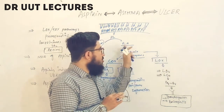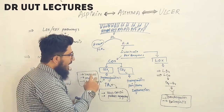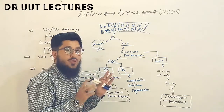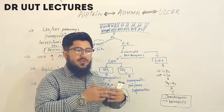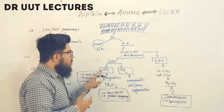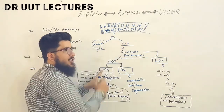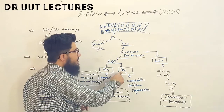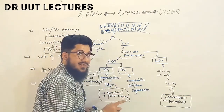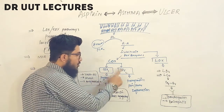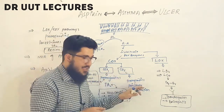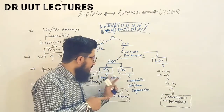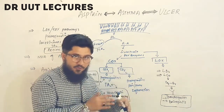When COX interacts with arachidonic acid, remember we have two types — COX-1 and COX-2 — available throughout the body. COX-1 produces prostaglandins and thromboxane A2, while COX-2 produces prostaglandins. So both COX-1 and COX-2 produce prostaglandins, but only COX-1 produces thromboxane A2, and each type of prostaglandin has different functions.